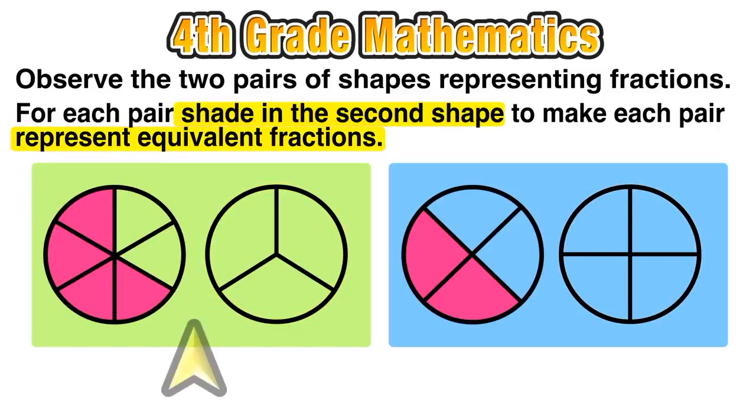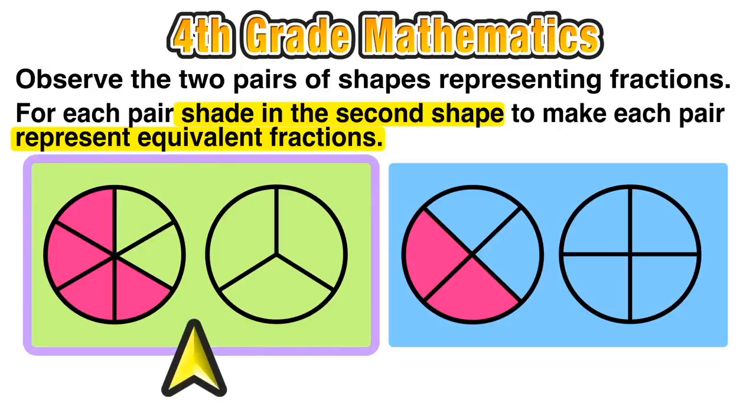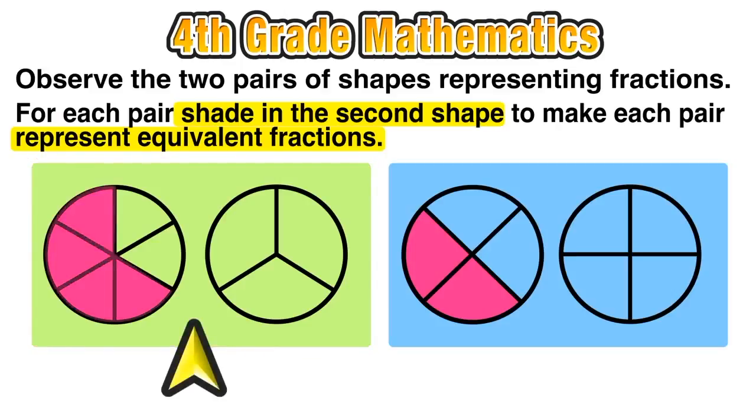So let's start with the first diagram on the left. We can see that out of the six regions, four of them are shaded in, in that nice pink color. So we have to make an equivalent shaded area on the other figure. And we can do that by shading in two of those three sections.